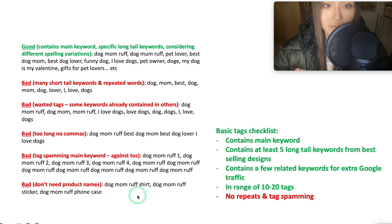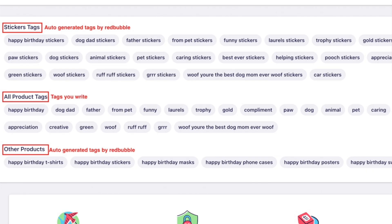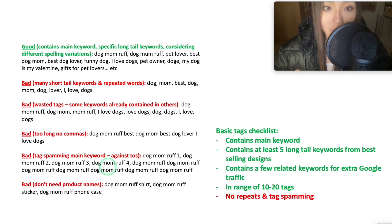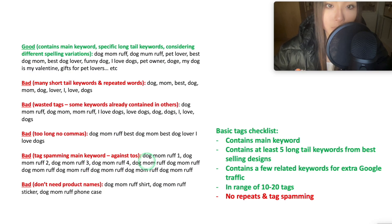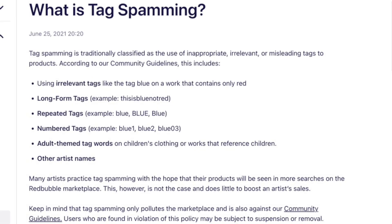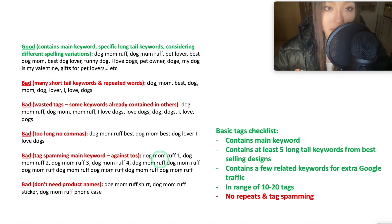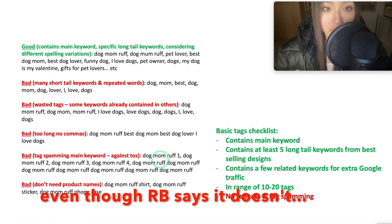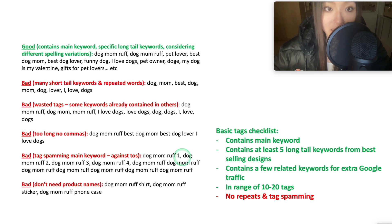You don't need to put product names in your tags because Redbubble generates product tags automatically. When looking through best-selling designs, you'll come across tag spamming — putting the same tags repeatedly, sometimes with numbers, and using completely irrelevant tags. This is against Redbubble's rules and there's a high chance you'll get suspended. Unfortunately it does boost designs slightly in search ranks, so you want to avoid niches with too many tag spammers.